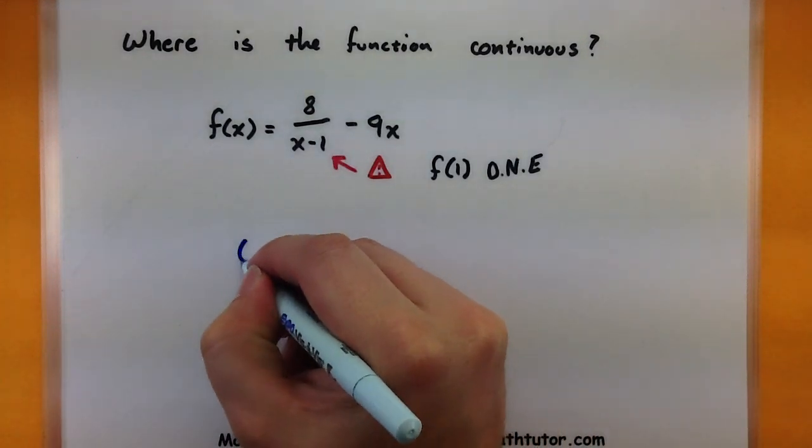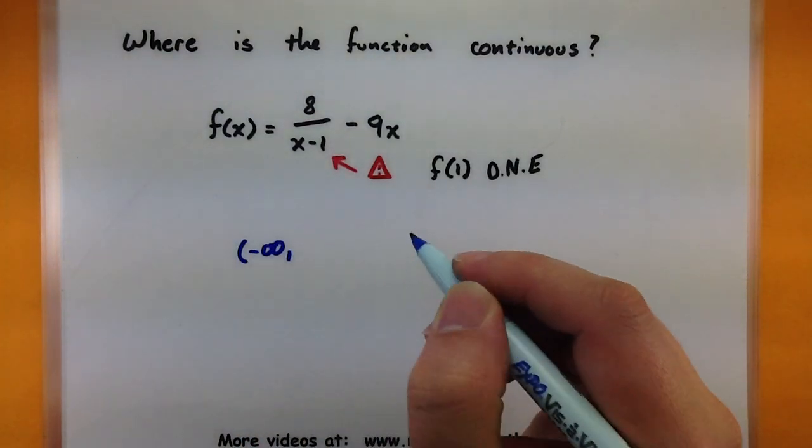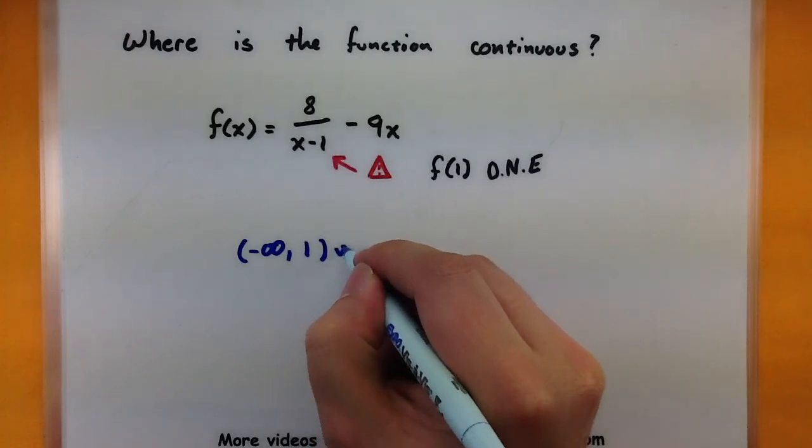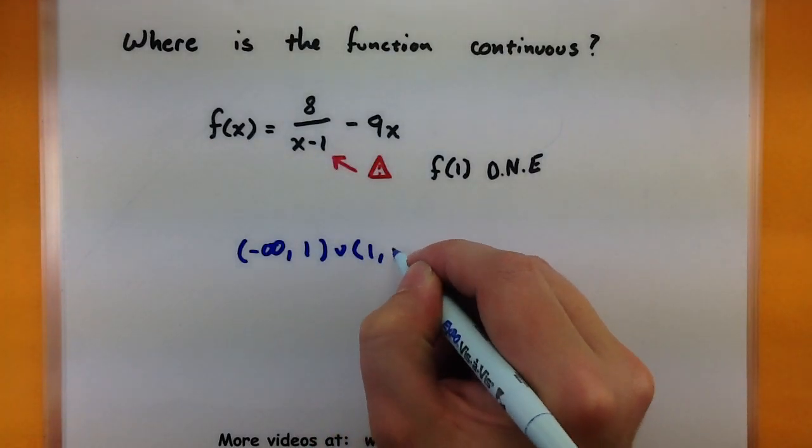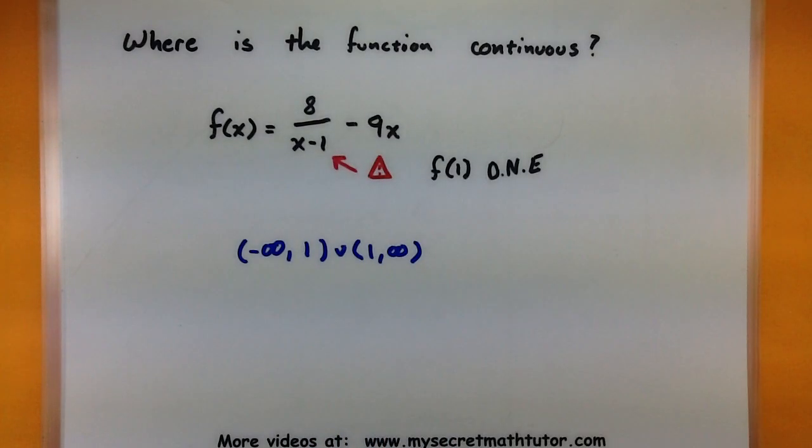So we would say that it is continuous from negative infinity up to one and from one to infinity. Again looking at the equation is a little bit more difficult but you're essentially looking for places where the function does not exist or the limit doesn't exist or where possibly those two things do not agree. Let's look at one more.